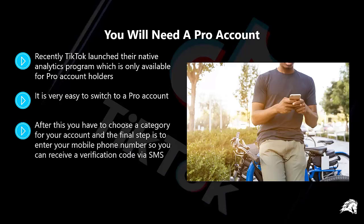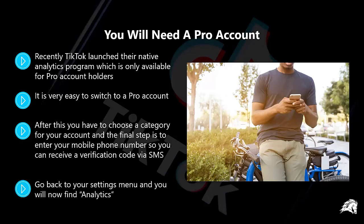After this, you have to choose a category for your account. And the final step is to enter your mobile phone number so you can receive a verification code via SMS. Enter the code and you're good to go. Go back to your settings menu and you will now find analytics. Tap on this to get to your dashboard. You will need to switch to a pro account before anything is recorded and displayed in your dashboard. It is going to take around a week to see anything meaningful, so post as much content as possible during this time.